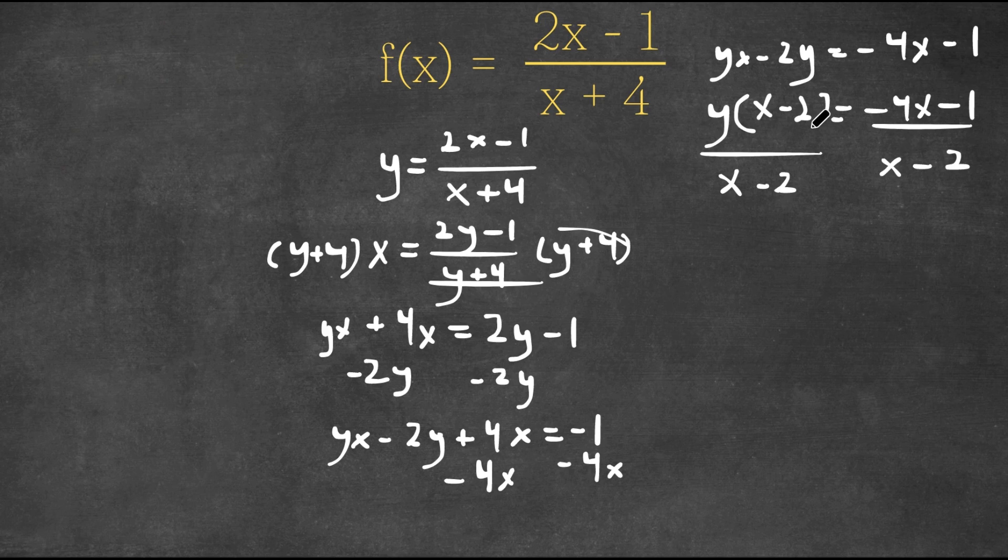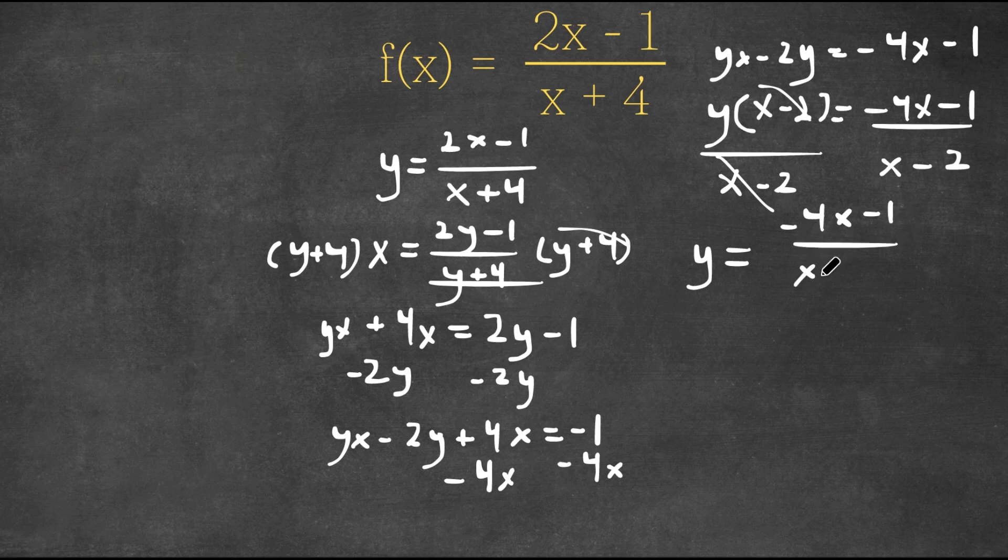So then these two cancel out and we are left with y = (-4x - 1)/(x - 2).